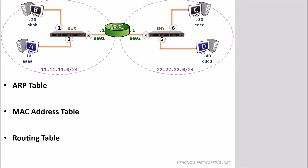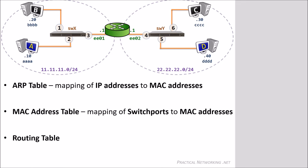An ARP table is a mapping of an IP address to a MAC address. All Layer 3 devices will have an ARP table. A MAC address table is a mapping of a switch port to a MAC address. As traffic flows through a switch, they will identify what devices are connected to each port by their MAC address and record it in their MAC address table. For example, at some point in our illustration, SwitchX is going to identify that the device on port 2 owns MAC address AAAA.